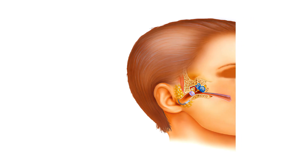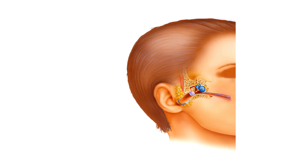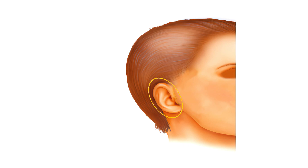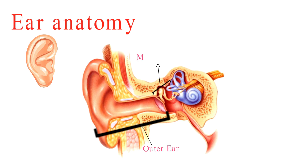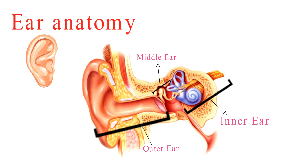Ears are more than meets the eye. They're intricate and multifaceted. We'll start by exploring the outer ear — the part you can see — and then journey deeper into the ear's inner sanctum to discover the magic that happens within. Ears consist of three main parts: the outer ear, the middle ear, and the inner ear. Each part plays a crucial role in the process of hearing.